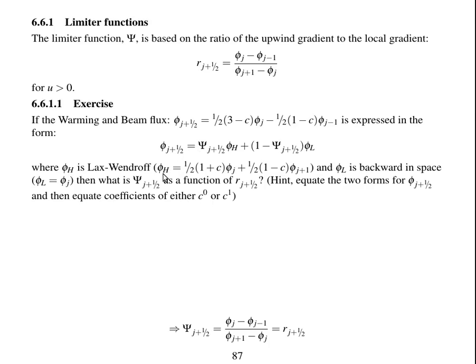Assuming that φ_H, the high order flux, is Lax-Wendroff, and we're going to get Warming and Beam in the end. And φ_L is backwards in space, so φ_L is φ_j. So then what does Ψ_{j+1/2} be?